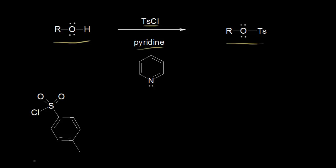When we look at the mechanism, we start with tosyl chloride. If you focus in on the sulfur here, the sulfur is bonded to two oxygens and a chlorine. We know that oxygen and chlorine are more electronegative than sulfur, so they're going to withdraw some electron density from that sulfur. Since sulfur is losing some electron density, the sulfur becomes partially positive, and we have an electrophilic center, so the sulfur wants electrons.